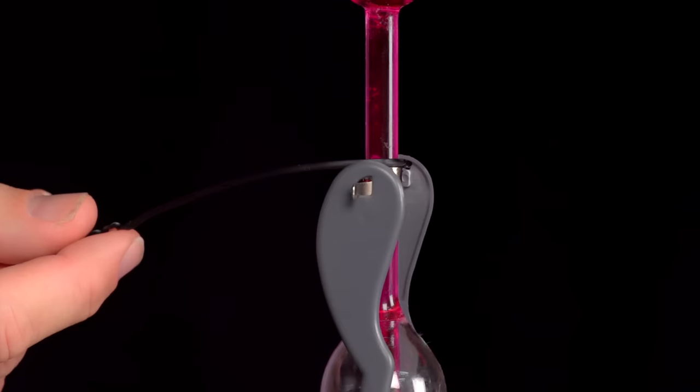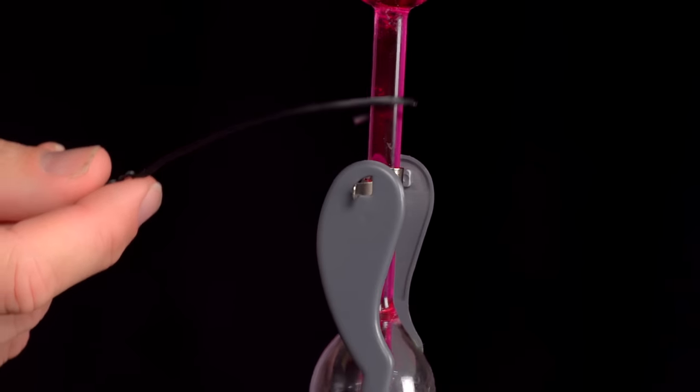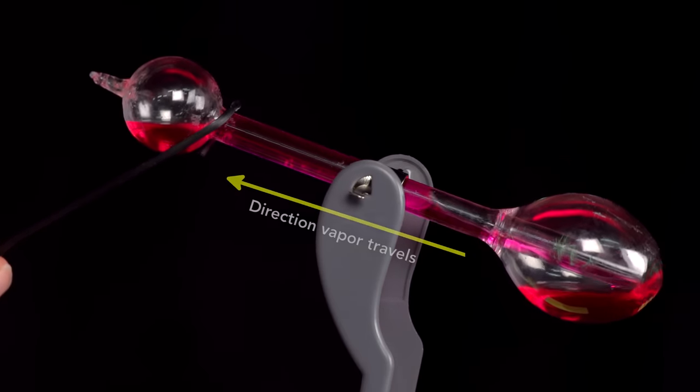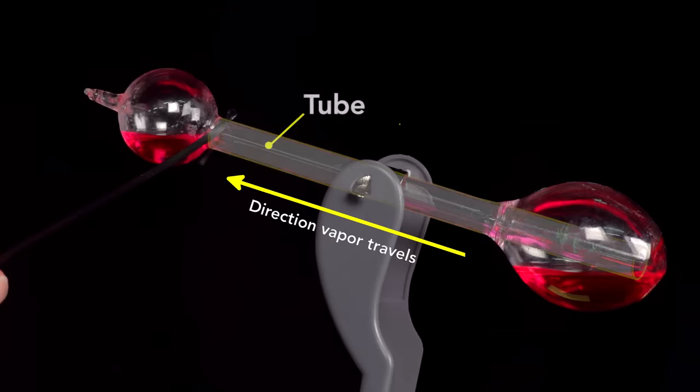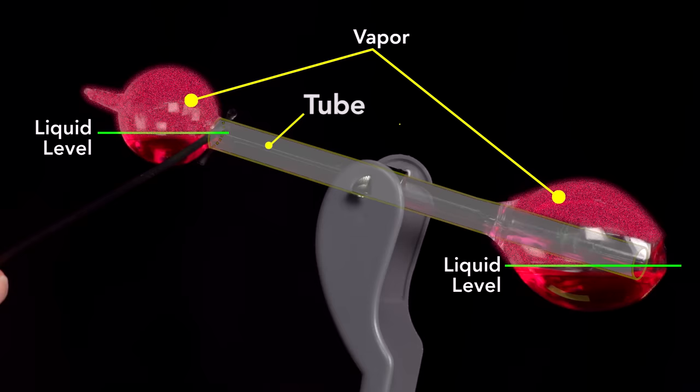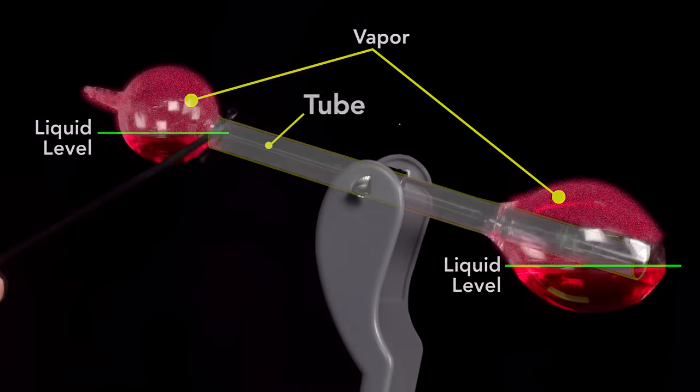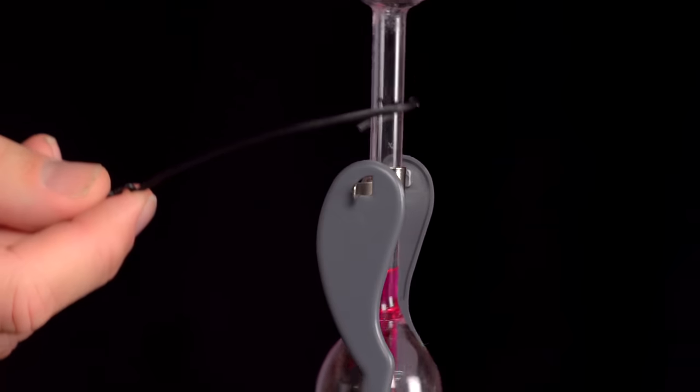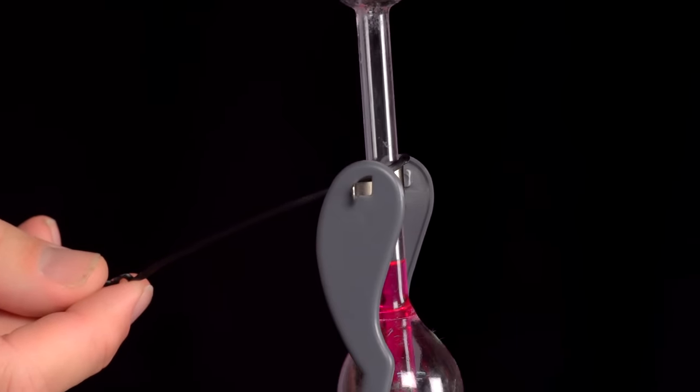To see the pressure equalize, I'll slow down the bird as I tilt it forward. Right now, the head is half full. When I tilt it, you see a slug of vapor go from bottom to top. I've tilted it far enough forward that the liquid in the head is below the top of the tube, and the liquid in the base is below the section of the tube that almost reaches the bottom of the bird. This allows the pressure to equalize, and as the bird becomes upright, the liquid returns to the base before the cycle starts again. In operation, it doesn't tilt quite this far forward, and so the pressures don't fully equalize.